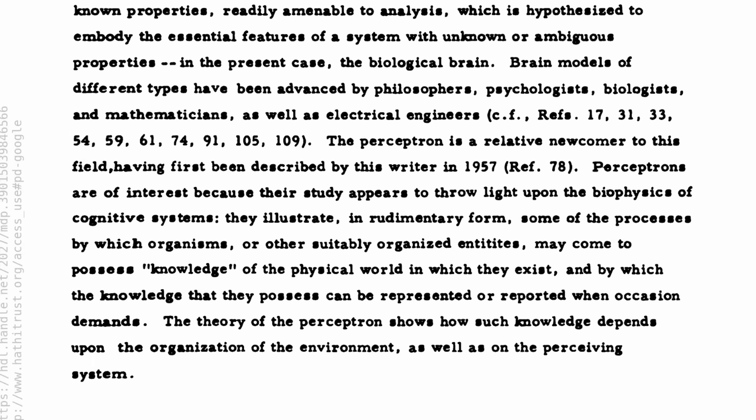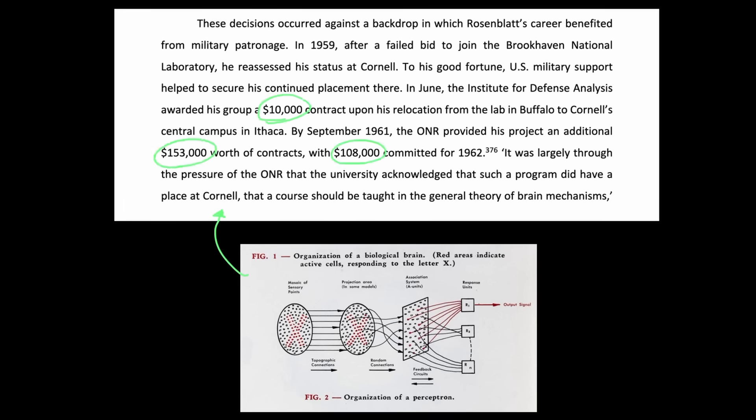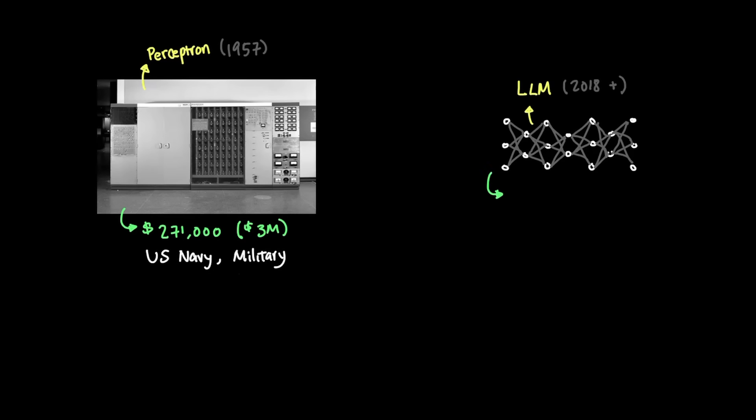And Frank Rosenblatt said that Perceptrons may come to possess knowledge of the physical world in which they exist. And they ended up getting a huge funding from the U.S. Navy in the total amount of around $271,000, which in today's money adjusted is around $3 million. LLMs, on the other hand, easily get hundreds of billions of dollars of investments from venture capitals, private equity, and also from Magnificent Seven's capital expenditures.